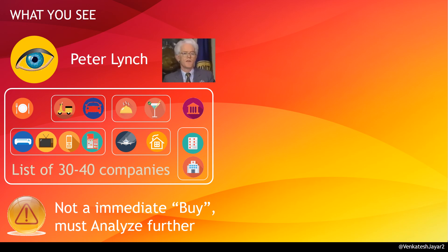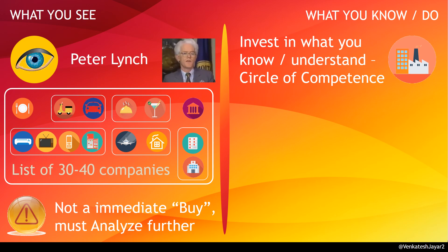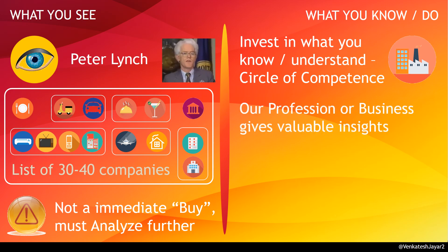What you know or do: Every investor will be working in a company or running a business. Investors pick companies or sectors which they know or understand well due to the experience gained from their profession or business. This is more of sticking to a circle of competence. Our profession or business has earned us a wealth of knowledge in a sector. This knowledge could be on various financial and operational metrics between companies in the sector — who is the market leader, the competitive scenario, and so on. These valuable insights help in picking stocks within the same sector.